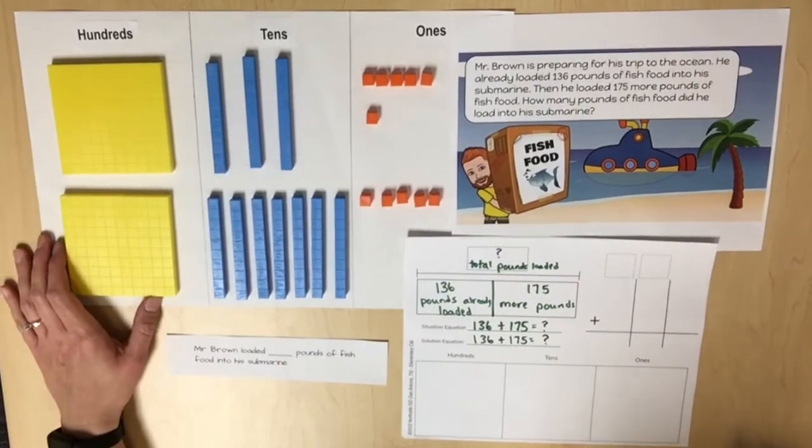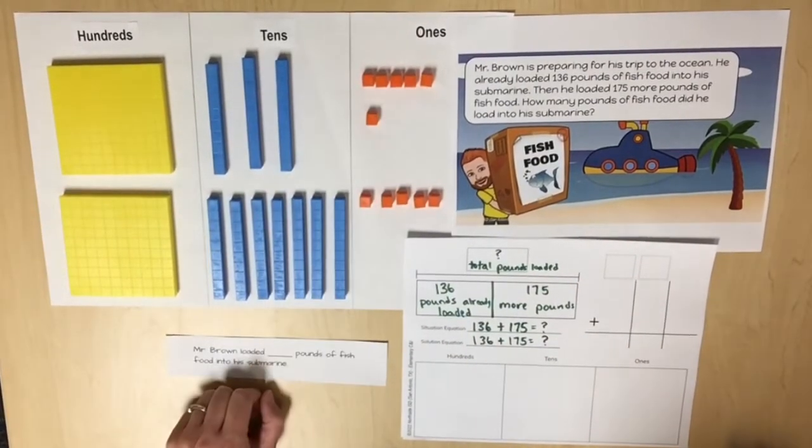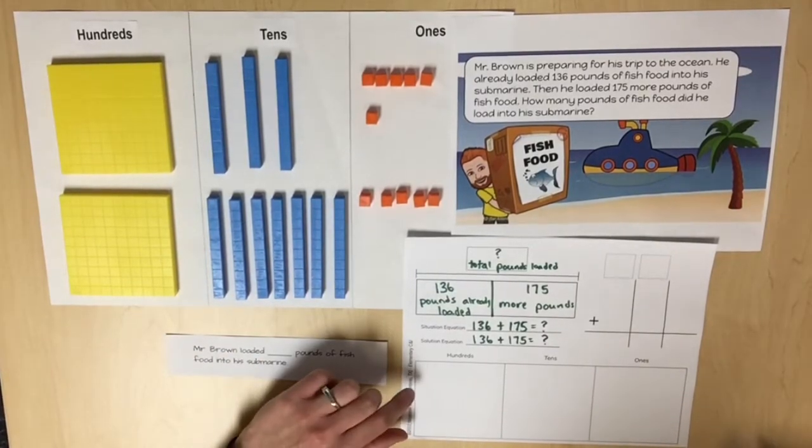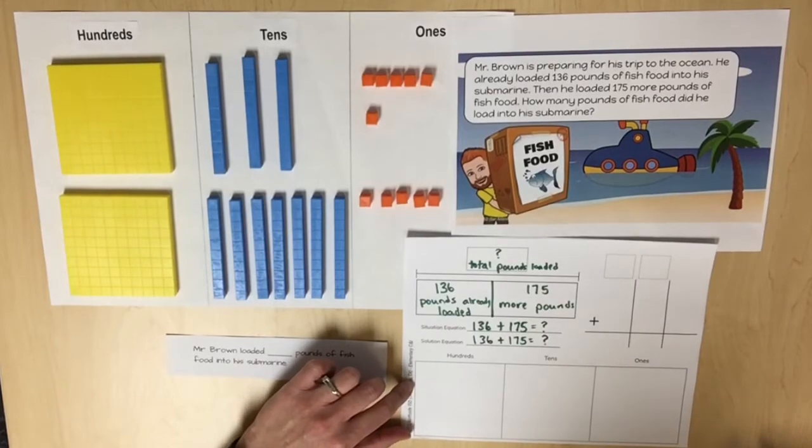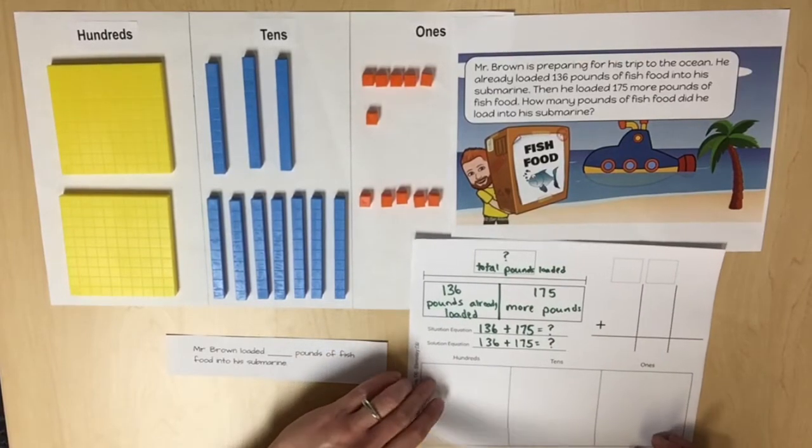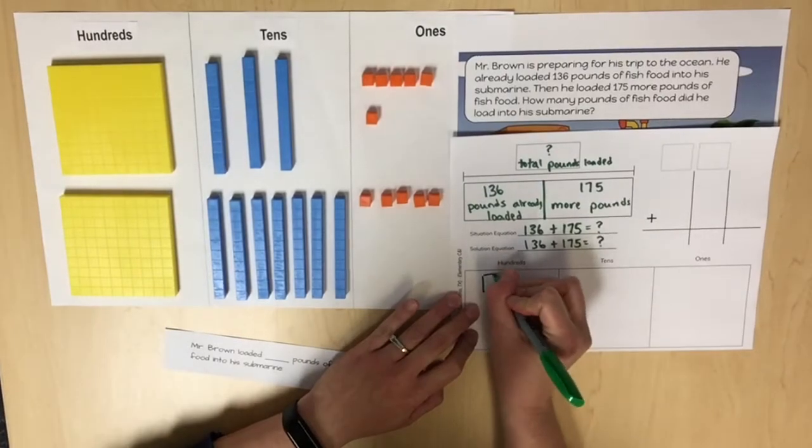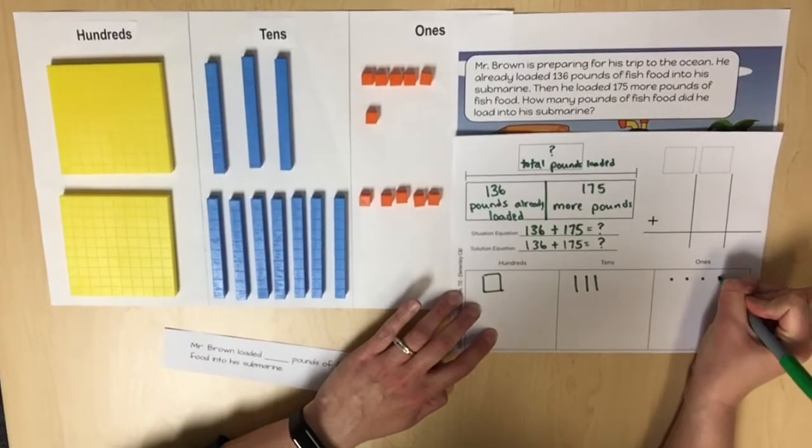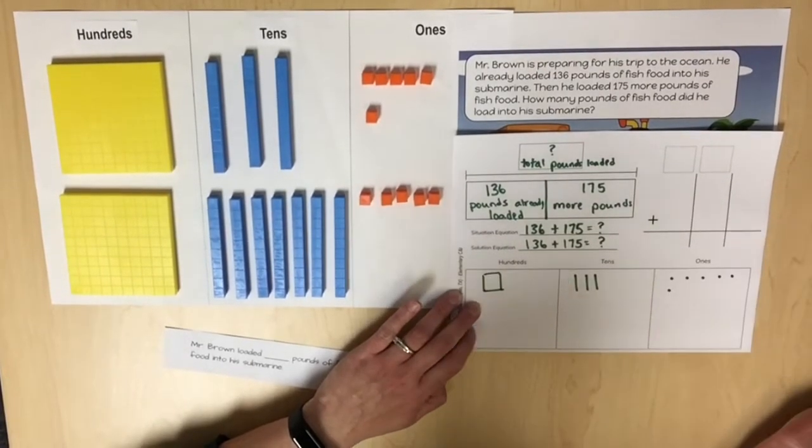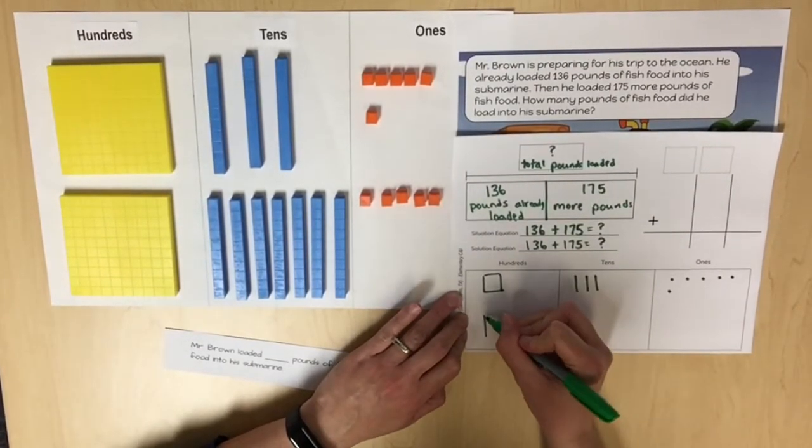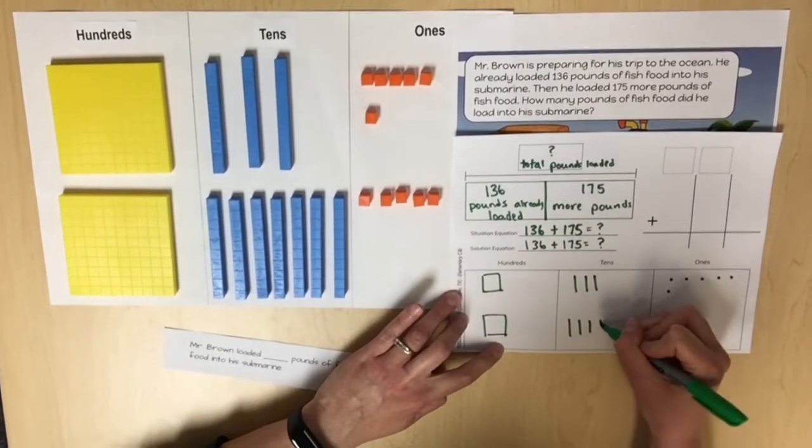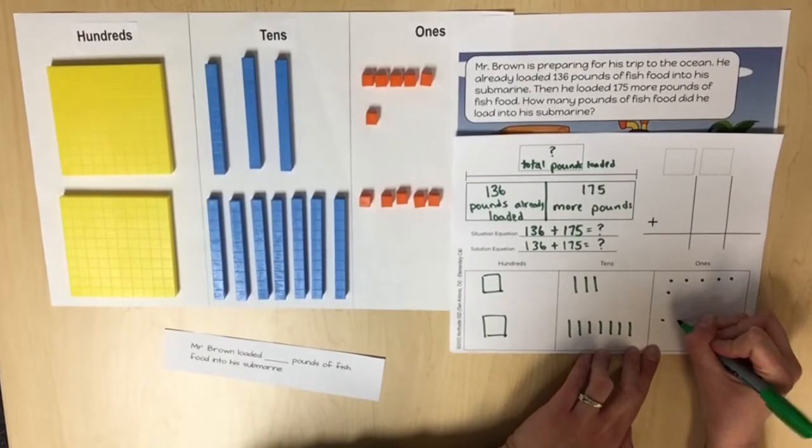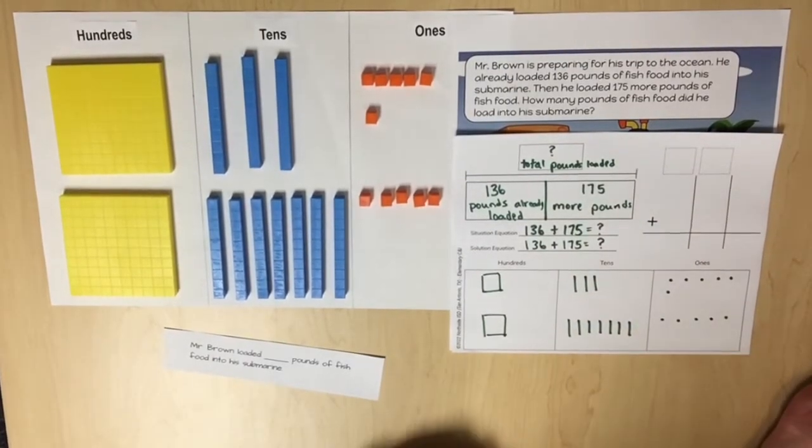Have students use base 10 blocks to represent 136 and 175 on a place value chart. Students should also create a pictorial representation using lines, squares, and dots. 136 and 175.